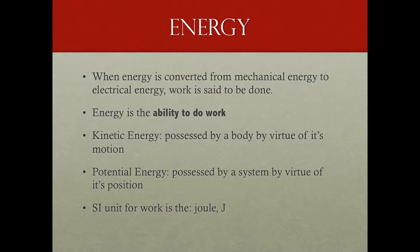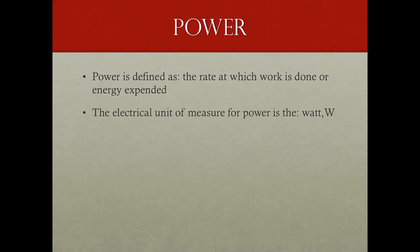SI unit for work is the joule and brings us to power. Now power is defined as the rate at which work is done or energy expended. The electrical unit of measure for power is the watt or W. And we're all pretty familiar with that. We look and we know wattage of our microwave ovens or hair dryers, and especially like light bulbs. We see that all the time in our homes. Where P equals power in watts, power equals W divided by T. The W stands for work in joules, and T for time in seconds.